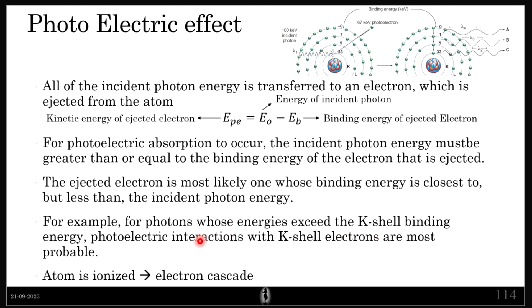The atom is ionized, but the advantage here is that you get an electron cascade, which produces more X-rays overall. However, the amount is more but the energy per X-ray is less — this is the key difference between intensity and energy. There are more X-rays produced, but the energy of each individual X-ray is less.